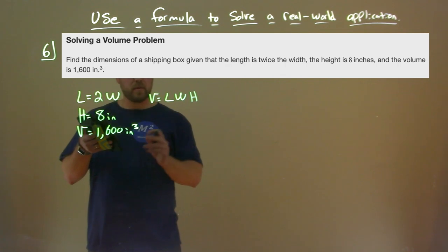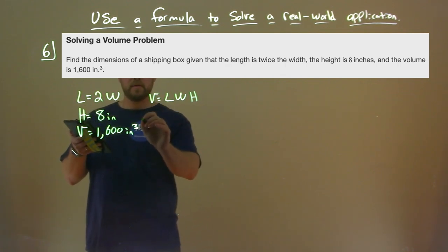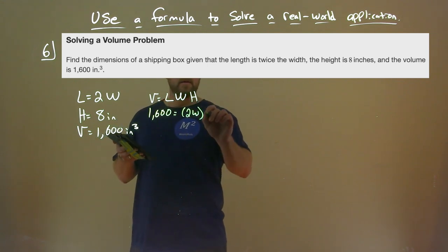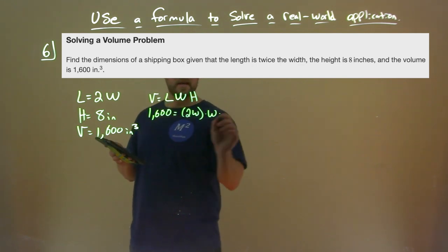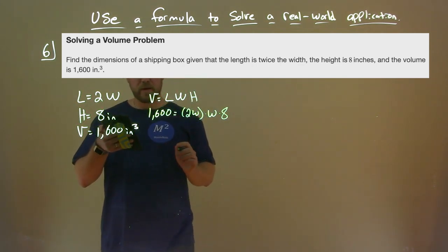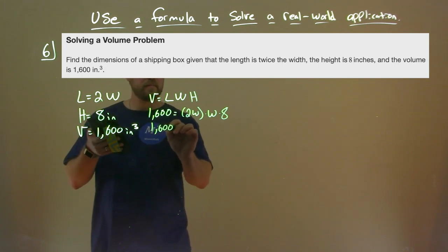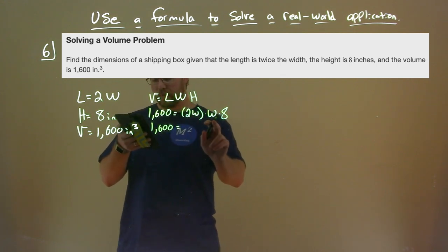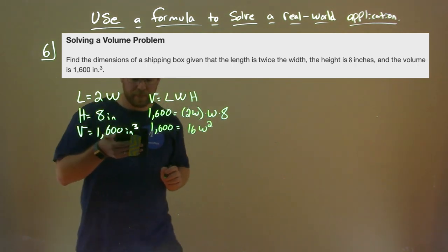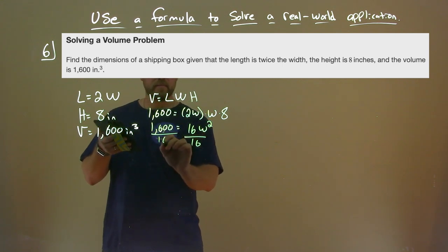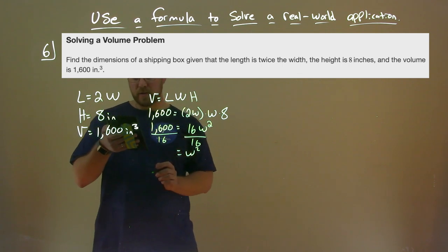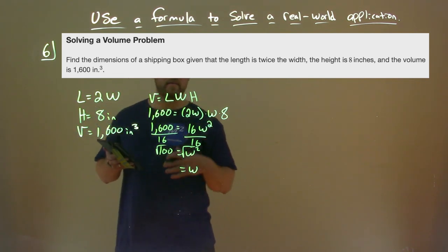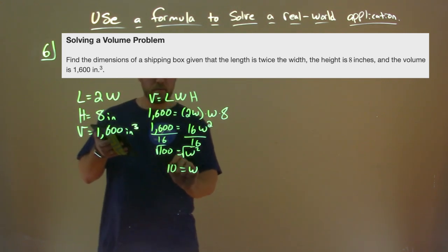Plugging in: 1,600 equals 2W times W times 8. 2 times 8 is 16, and W times W is W squared, so we have 16W squared. Dividing both sides by 16: W squared equals 100. Taking the square root of both sides — we only care about the positive value since we can't have a negative dimension — the square root of 100 is 10.